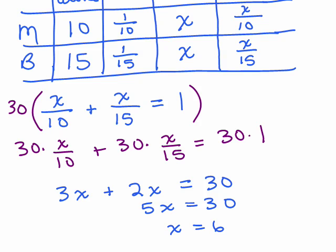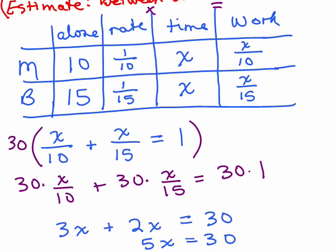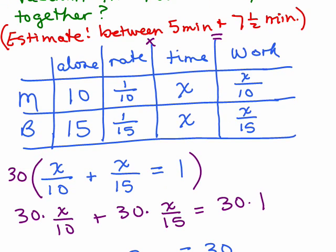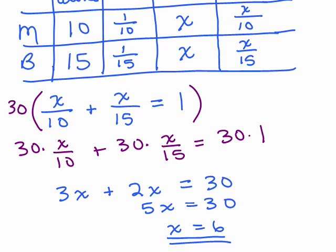Now what did x stand for? So we got x equals 6. We don't leave an answer like that, because this was not a problem that said solve. This was a word problem, so we want to answer in words. So let's go back up. What did x stand for? It stood for the amount of time they worked together. Now let's go back a little bit further. Our estimate was that the answer would be somewhere between 5 and 7 and a half minutes, and yes, 6 is between 5 and 7 and a half minutes. So it looks like the answer is 6 minutes, so now we want to actually check our work.